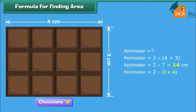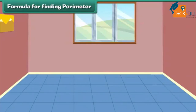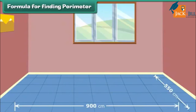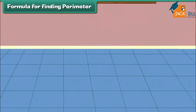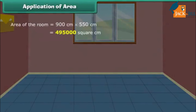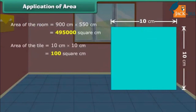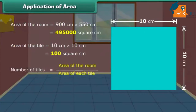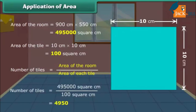Alternatively, perimeter is equal to twice the sum of the length and width. This is a room of length 900 centimeters and width 550 centimeters. Rohan wants to change the tiles of the floor. If each side of the new tile is 10 centimeters, how many tiles will be needed? The area of the room is equal to the length multiplied by the width, which is 4,95,000 square centimeters. The area of the tile is equal to 10 multiplied by 10, which is 100 square centimeters. The number of tiles needed is found by dividing the area of the room by the area of each tile. Thus, the number of tiles needed is 4,950.